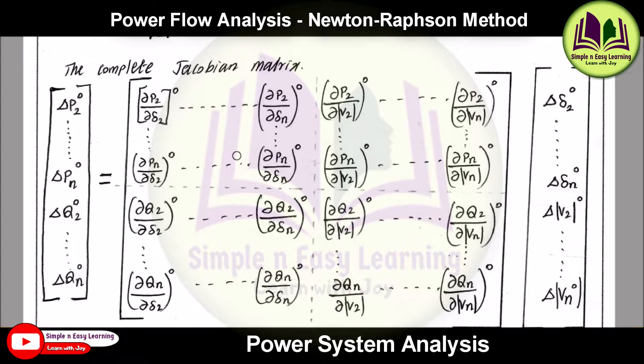The first term in the Jacobian matrix is ∂P2/∂δ2 up to ∂Pn/∂δ2. In this side ∂P2/∂δn. So this forms a separate matrix, and the second term ∂P2/∂V2. Similarly here ∂Q2/∂δ2, similarly here ∂Q2/∂V2. So these four separate matrices you need to find with the help of the equations, and we need to substitute over here. This Jacobian matrix would be multiplied with Δδ2 up to Δδn and ΔV2 up to ΔVm.